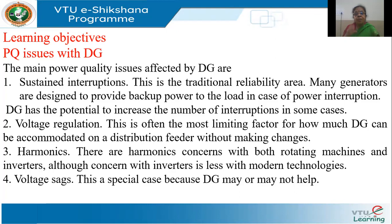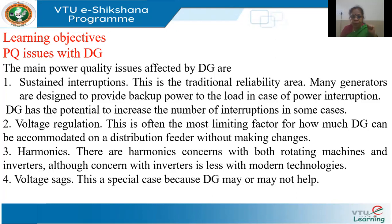The presence of a DG can interfere with the protection scheme and protection strategy of the utility, and in such cases there is full possibility that the DG will actually increase the number of interruptions. The second issue is voltage regulation. We should see how much DG can be accommodated on a distribution feeder. When I use the word distributed generation, we are talking of energy being geographically distributed and also occurring on the distribution side of the network.